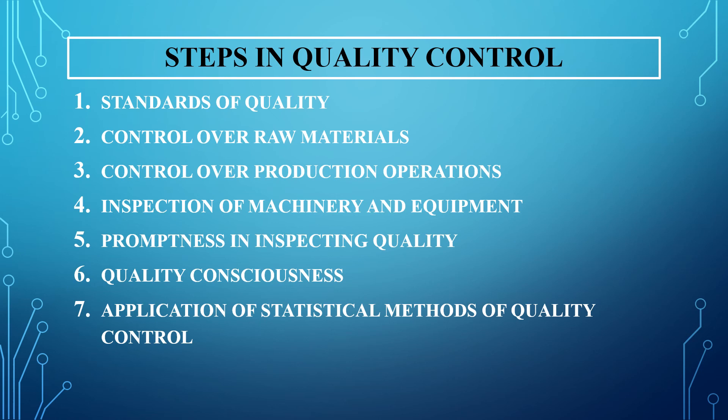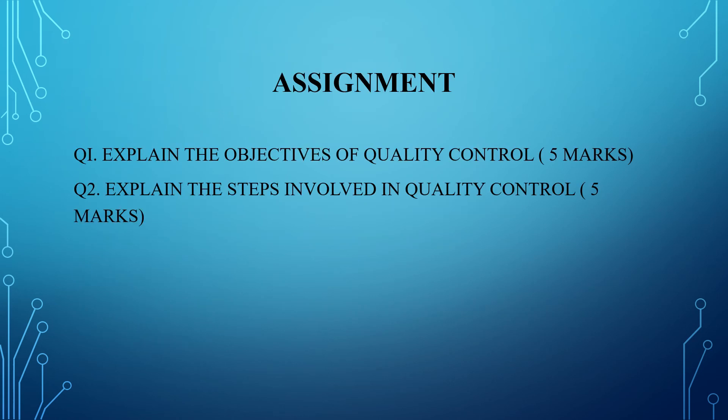So today we have seen what is quality, what is control, what is the meaning of quality control, what are the objectives of quality control, and what are the various steps in quality control. I will be giving you an assignment in Google Classroom. I want you all to write two answers — it is a graded assignment. The first question is: explain the objectives of quality control. The second is: explain the steps involved in quality control.